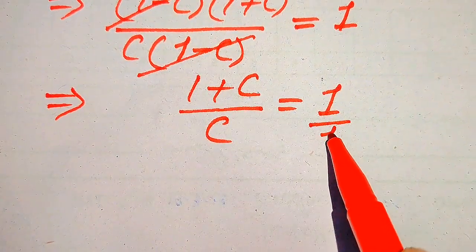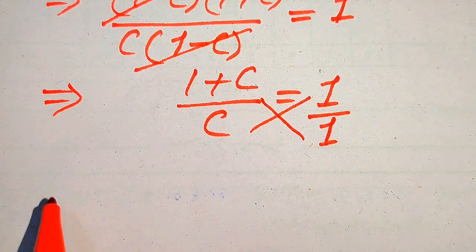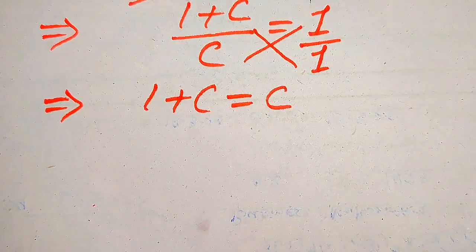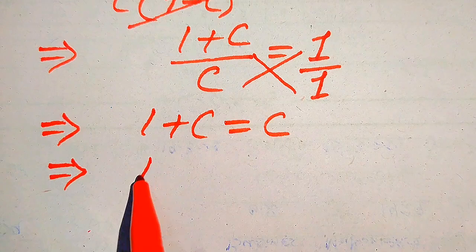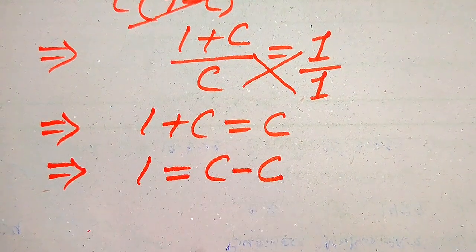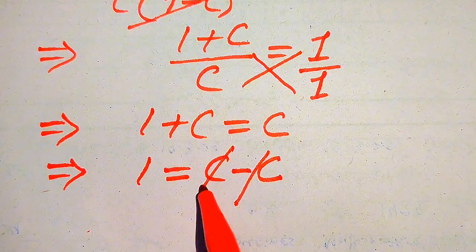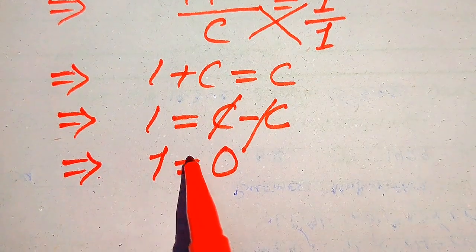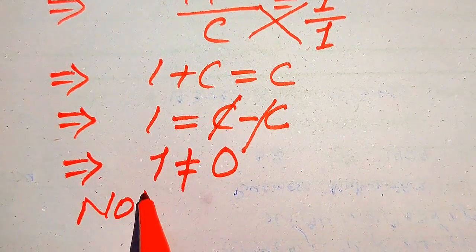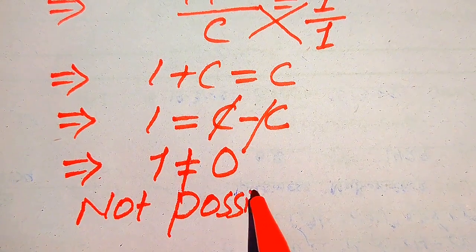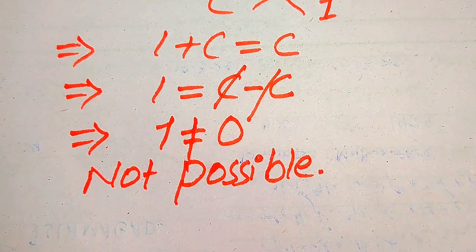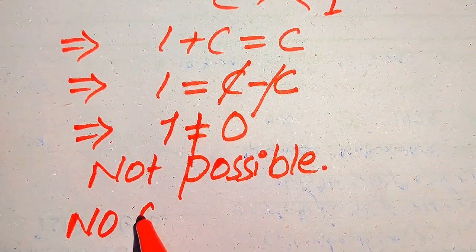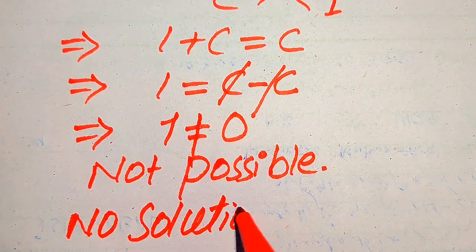The denominator on the right hand side is 1. When we cross multiply the terms we get 1 plus C is equals to C. Moving plus C to the right hand side gives 1 equals C minus C. The positive and negative C cancel out and we get 1 is equals to 0. This is not possible that 1 is equals to 0, which means we cannot find any value of C in the second method. This simply means the question has no solution.